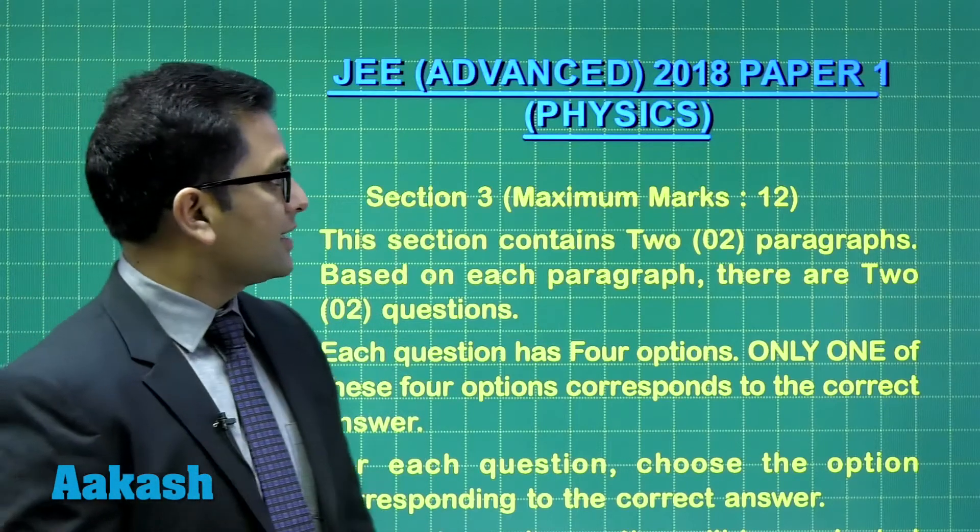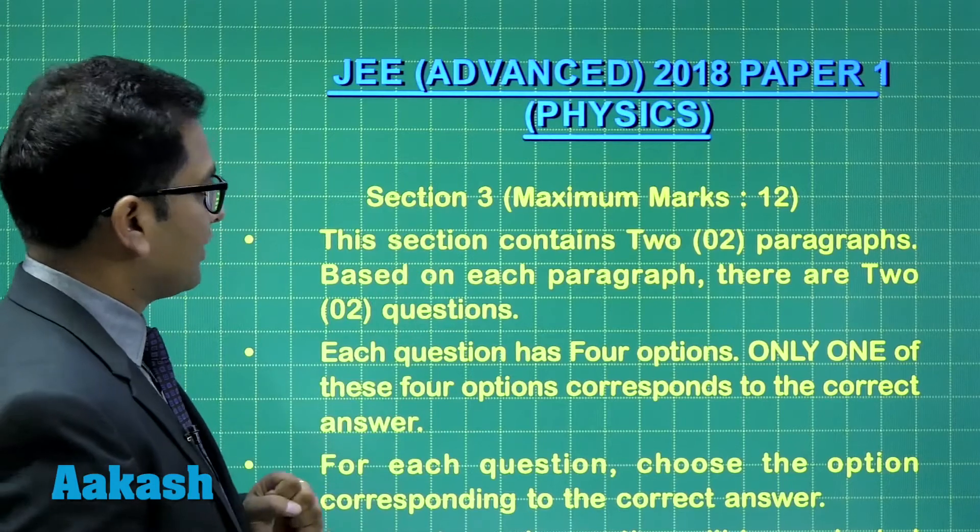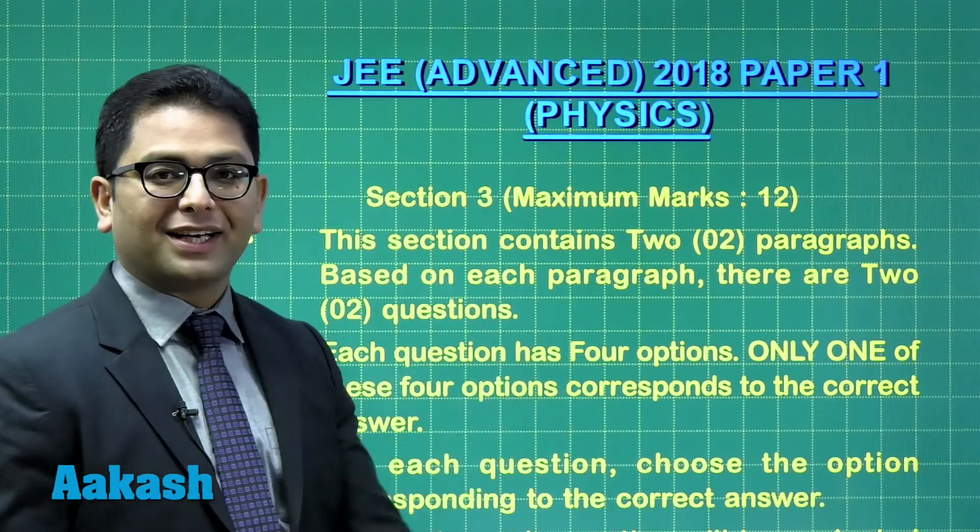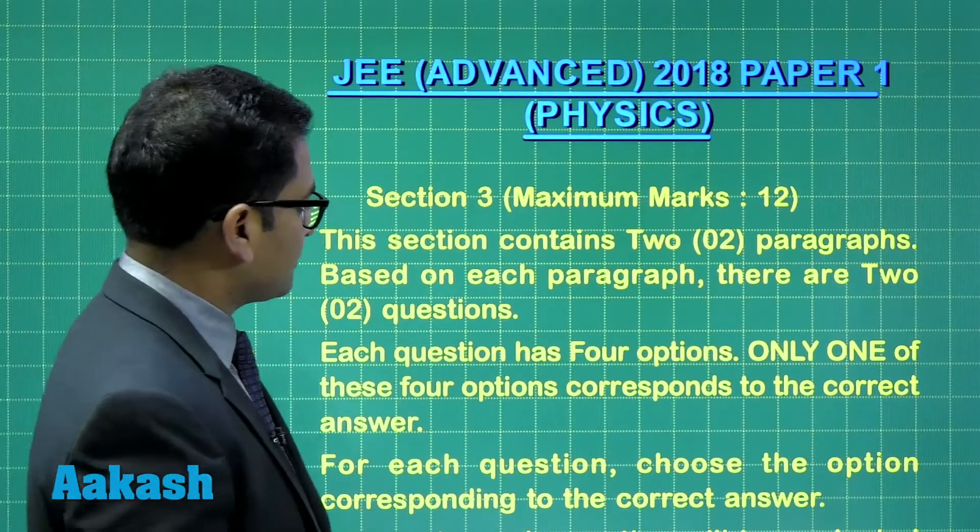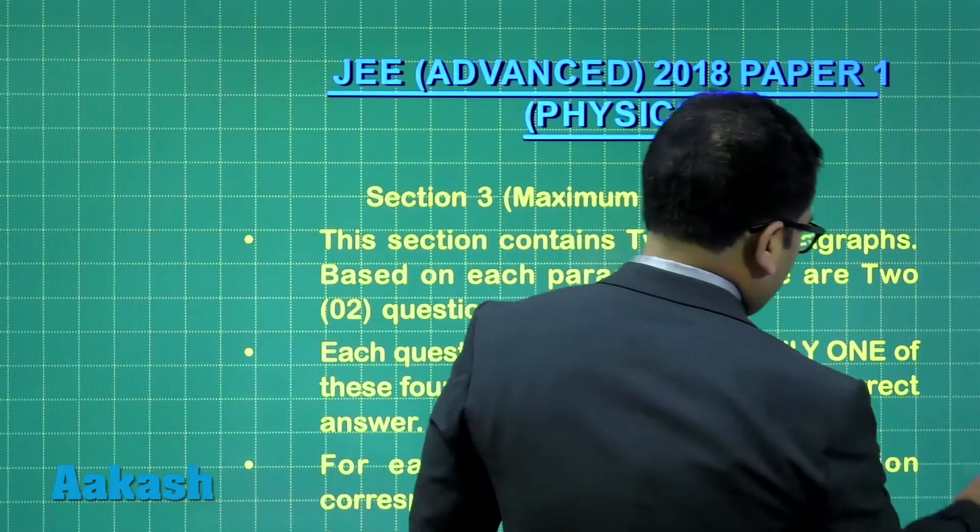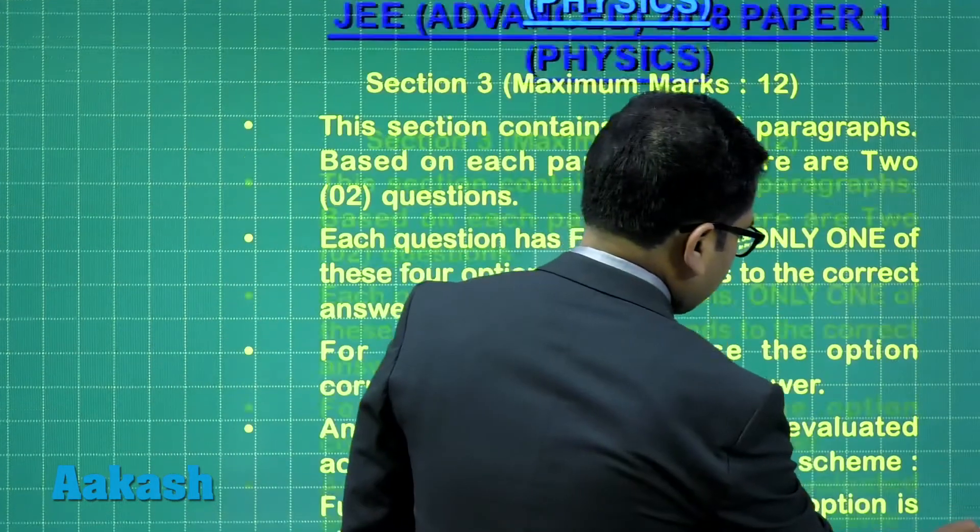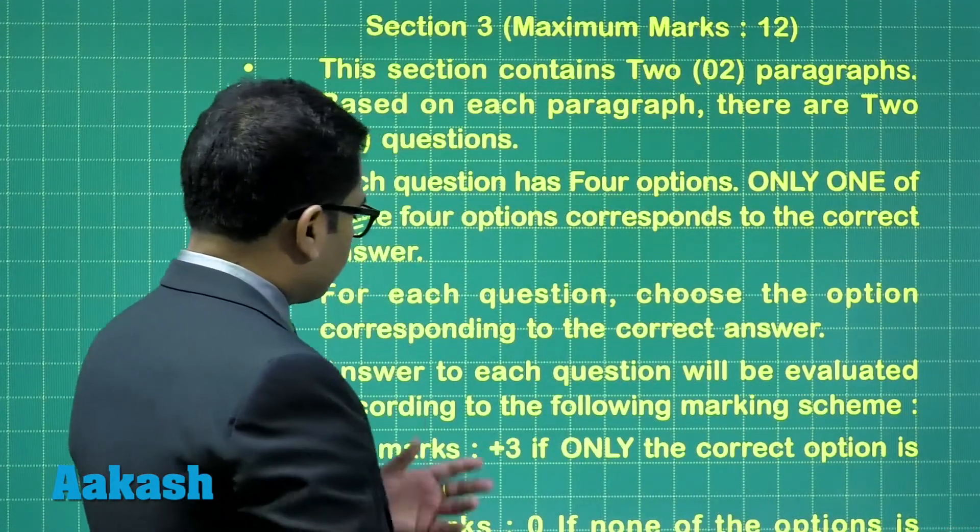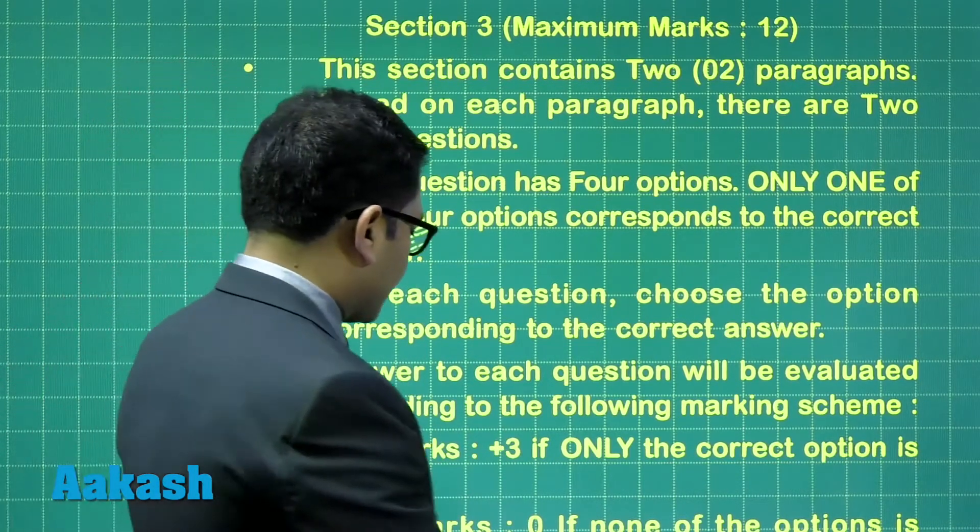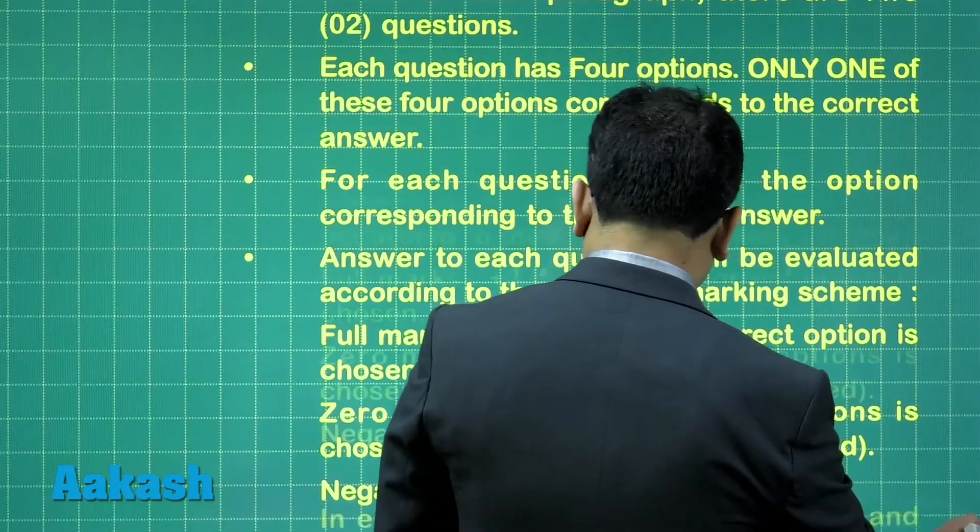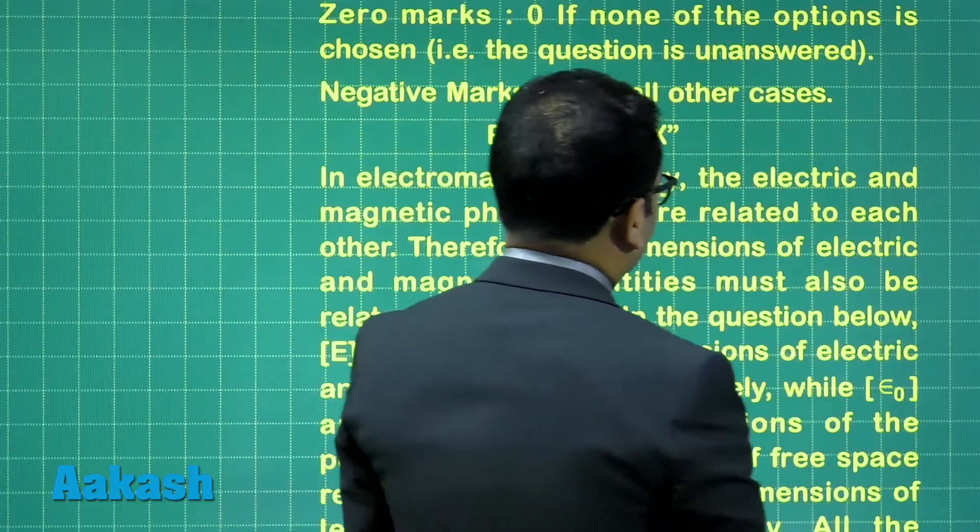Okay, proceeding further. This is the third section, which has a maximum of 12 marks, provided you score correctly on all questions. It contains two paragraphs. There would be a single option to choose, and the marking scheme is very simple: plus 3 if you go for a correct one, minus 1 if you go for an incorrect answer, and zero if you do not attempt.